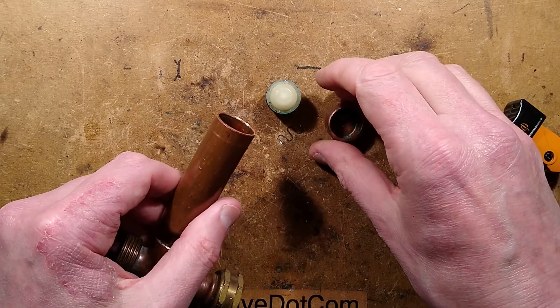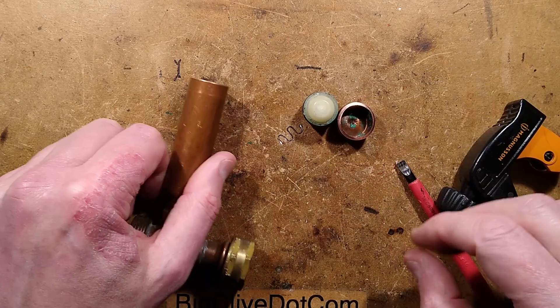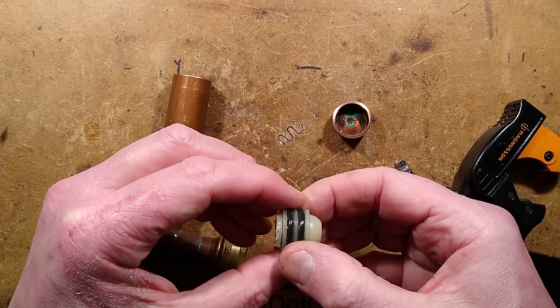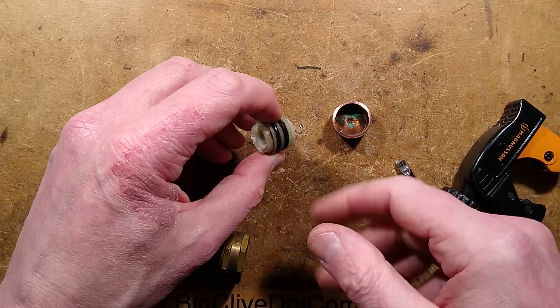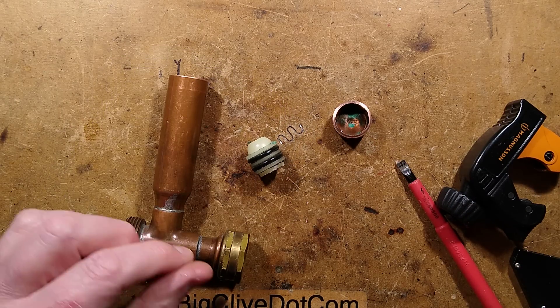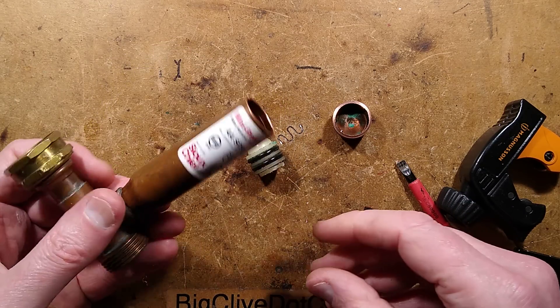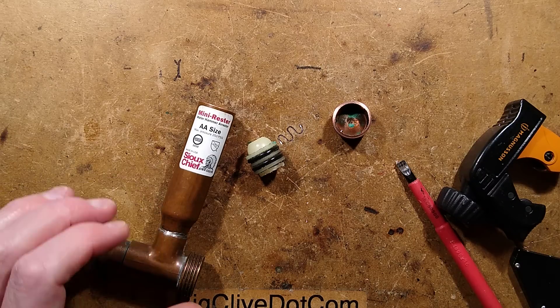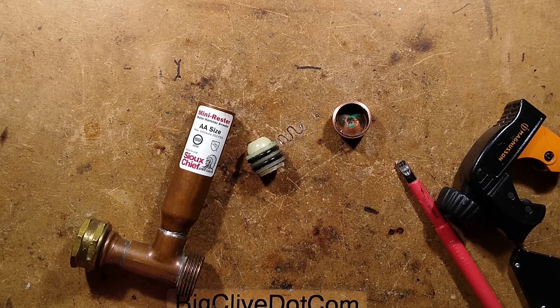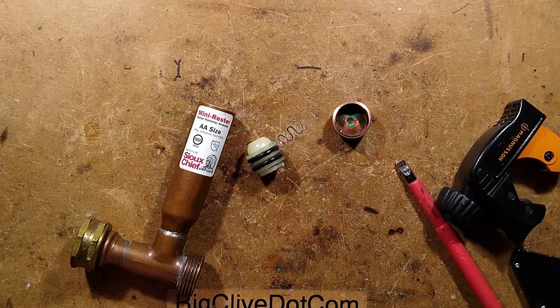But there we have it. It doesn't work now—could be fixed, I suppose. But that's it. Interesting, not really what I was expecting. I thought there was going to be a spring to make sure it always stayed at the bottom. I guess ultimately the air is the spring. So there we have it, the inside of the Sioux Chief Mini Rester—very simple but presumably effective in the right applications.